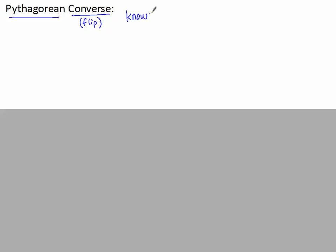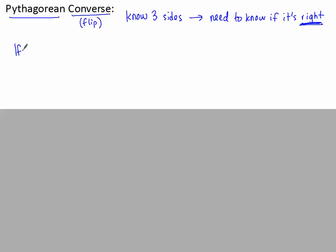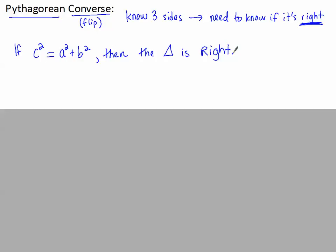The reverse is: we know the three side lengths and we need to know if it's a right triangle. We don't know if it's right when we're using the Pythagorean converse, but we know the three sides. The converse works just like any converse — starting at the end. If we do c² and then a² + b², and we get that they're equal, then we have a right triangle.